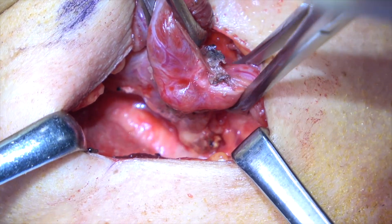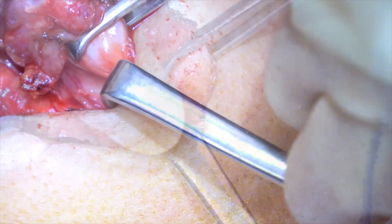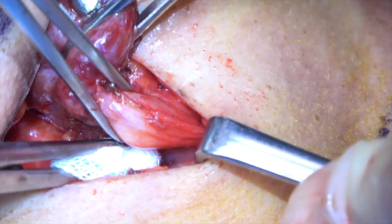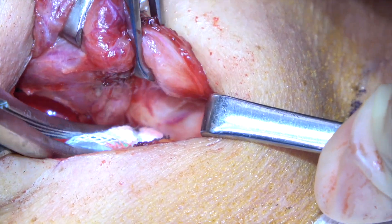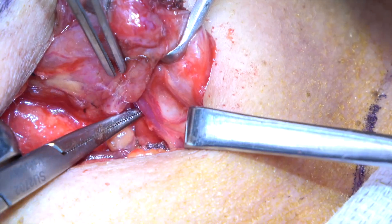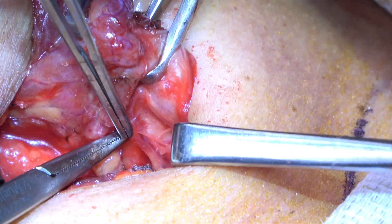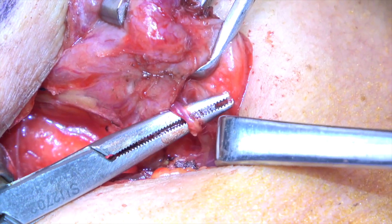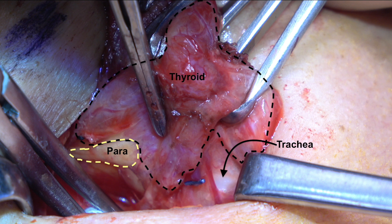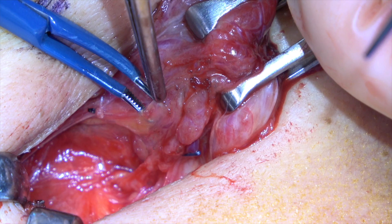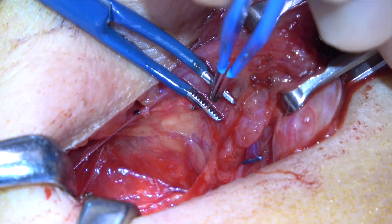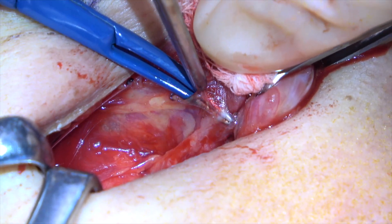The gland is again distracted to the contralateral side and a kittner sponge is used to brush the fascia off the gland and trachea. A small vein is ligated. With the gland partially delivered, we can now see the thyroid gland, a parathyroid, and the white of the trachea. We will start by dissecting the parathyroid off the thyroid gland to preserve its blood supply and ability to regulate calcium homeostasis.